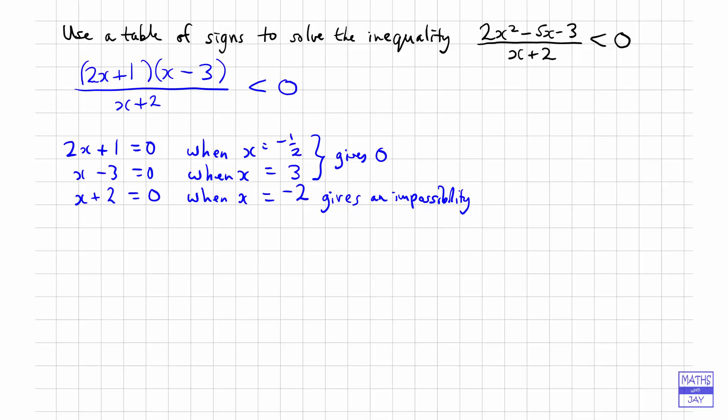Now the next thing to do is to construct our table of signs. So first of all, we want to know where x can be. And then we will have a look at what 2x plus 1, x minus 3, and x plus 2 is equal to in terms of the sign. So each of those things will either be negative, positive, or 0. And then once we've done that, we can combine them all to see what the whole fraction is equal to.